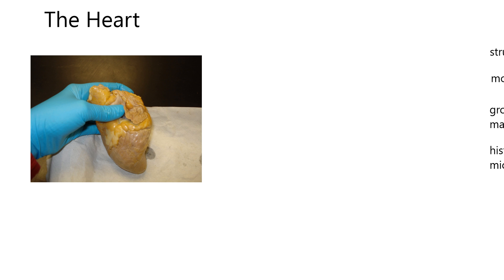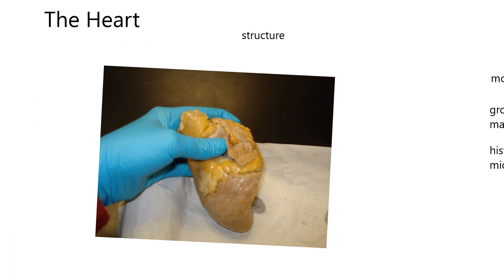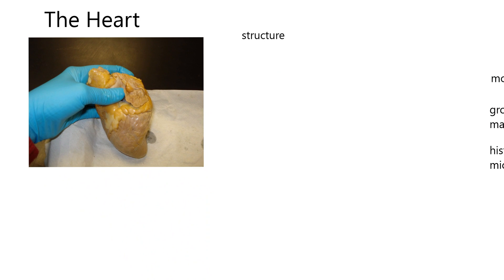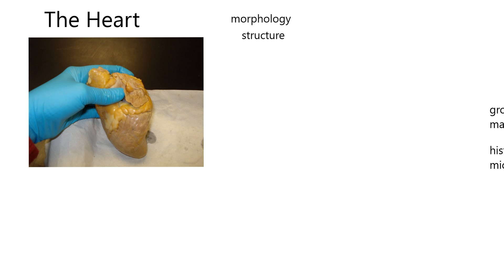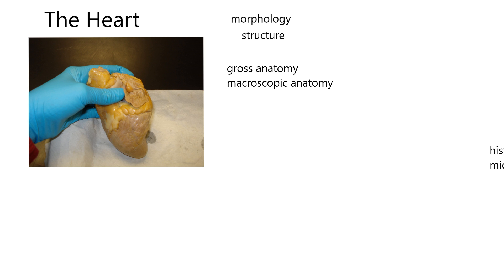I want to talk about some terms. We're going to do the structure of the heart using our naked eye, because we're just using our naked eye and looking at this picture. Whenever you use your naked eye and you're doing anatomy, we could call that morphology. Morphology means the study of structure. If we're using our naked eye, then you could say we're going to do gross anatomy of the heart — gross anatomy.